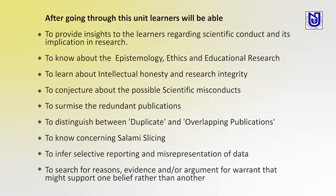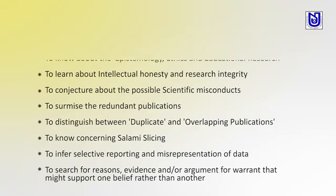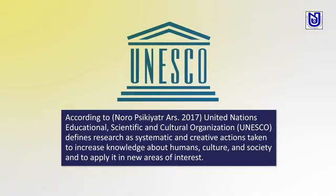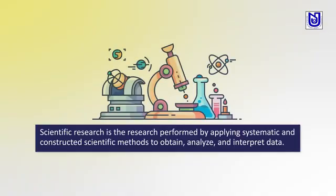Research ethics is a timeline — people have to know the timeline. The integrity and fulfillment of research, and the objective of research ethics and its importance include objectivity, competence, carefulness, integrity, legality, and openness. According to UNESCO, research is defined as a systematic and creative action taken to increase knowledge about the human, culture and society to apply new assets of interest. Scientific research is research performed by applying systematic and constructed scientific methods to obtain, analyze and interpret data.